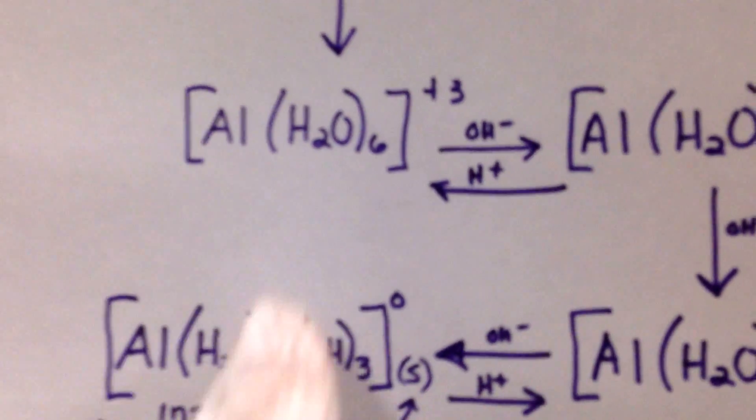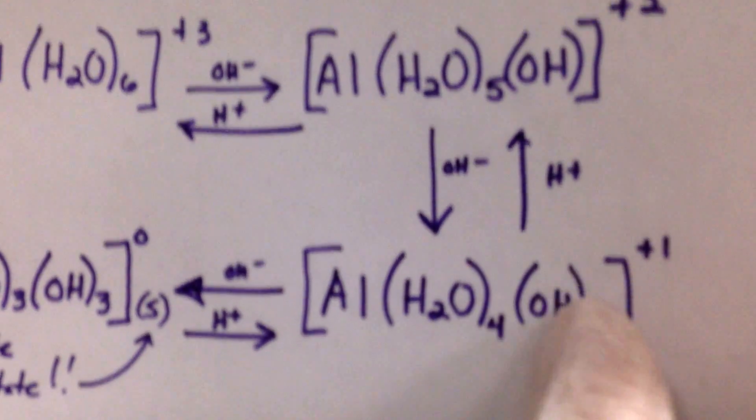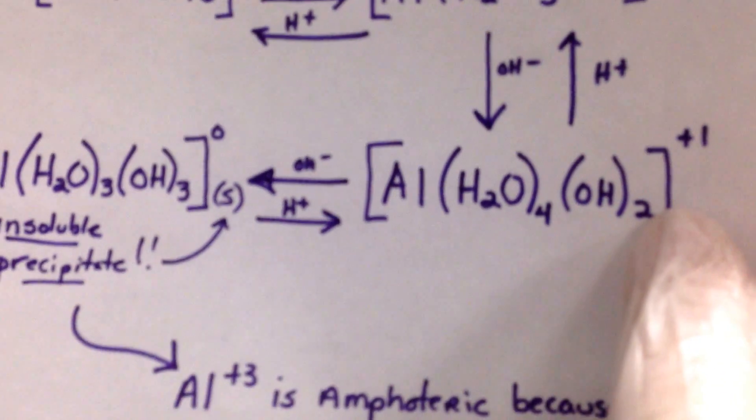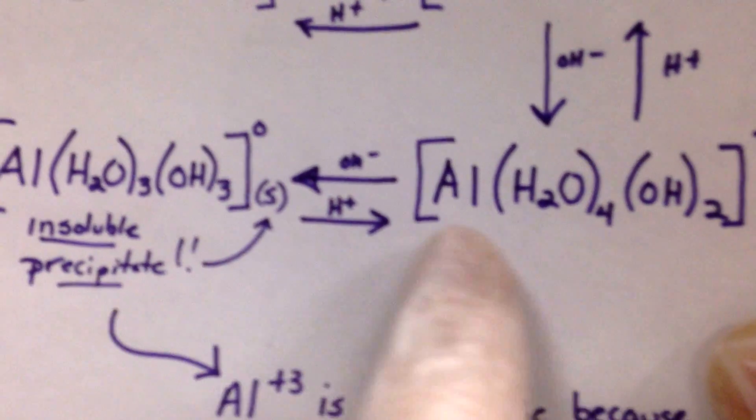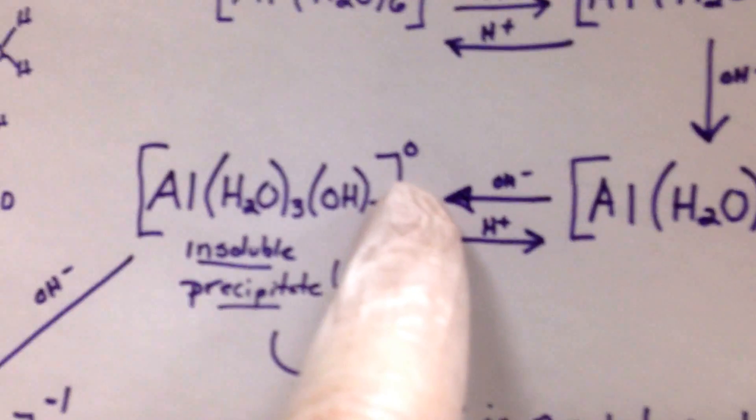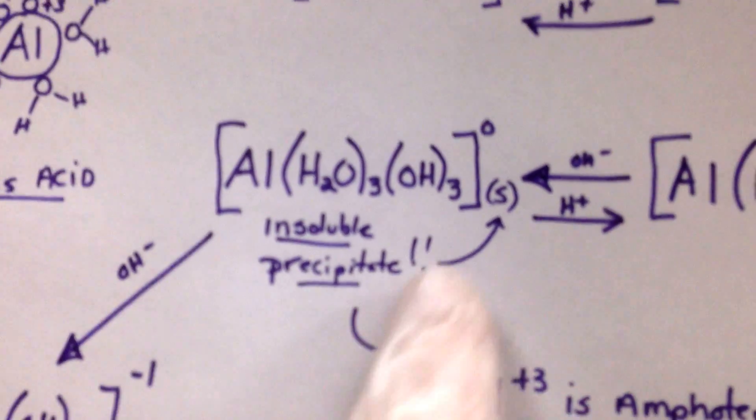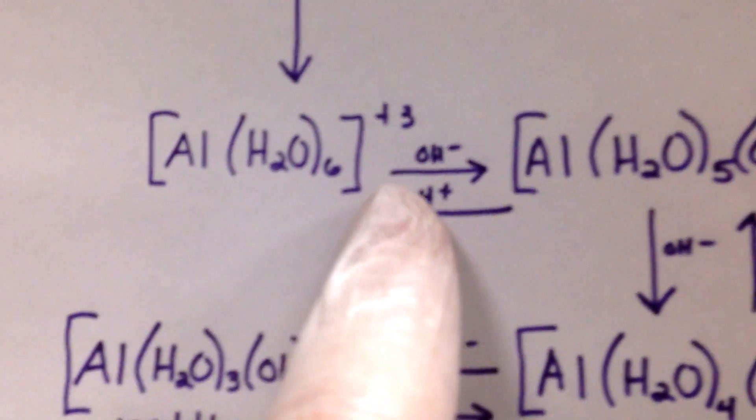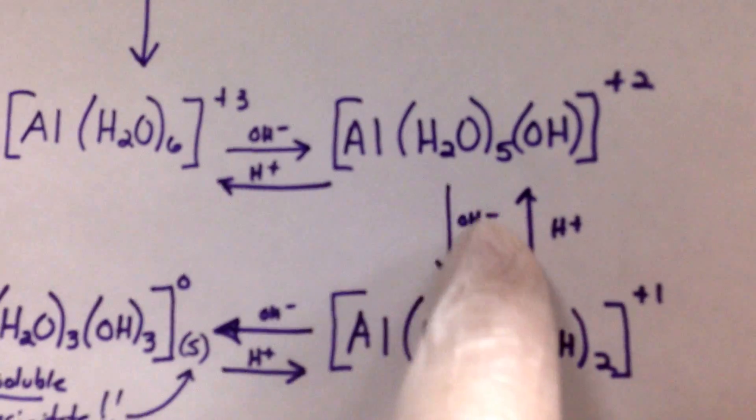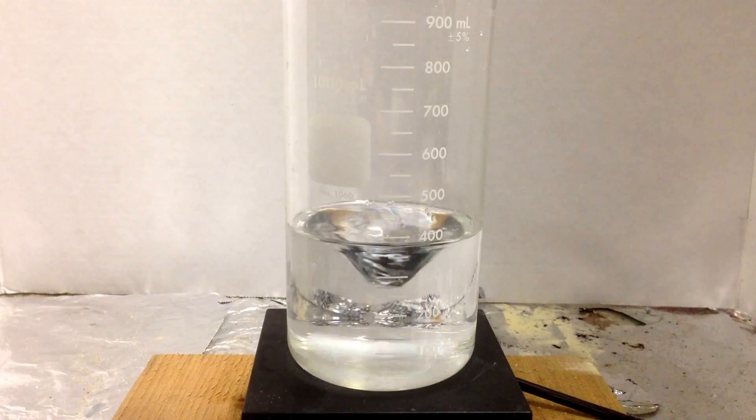There's something special that happens here. The charge goes from plus three to plus two to plus one, and then one more, it goes to zero. This is special. When this complex goes to zero, water cannot dissolve it anymore. It's a solid, a precipitate. So as I add base to this, we should see a precipitate occurring.